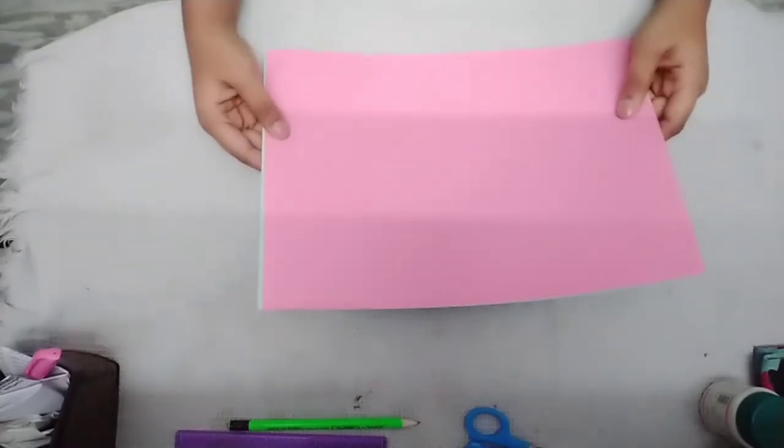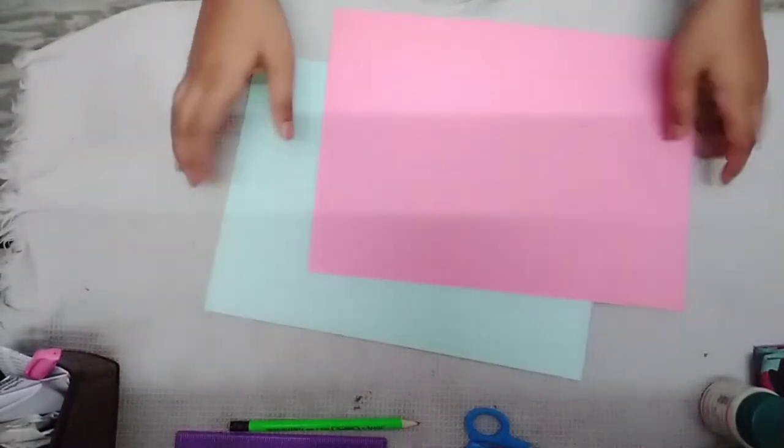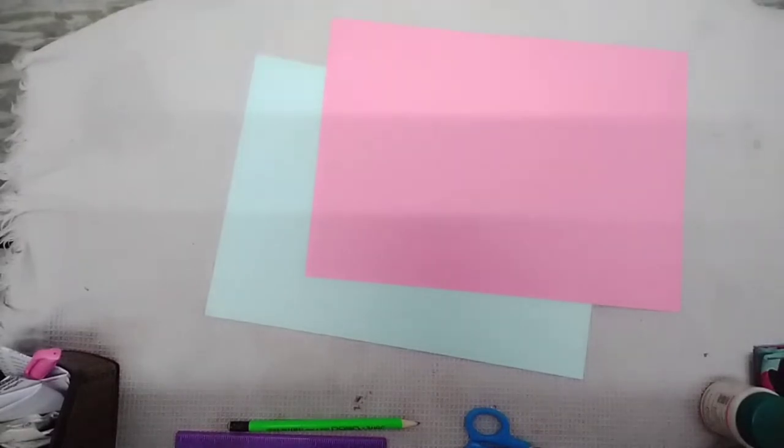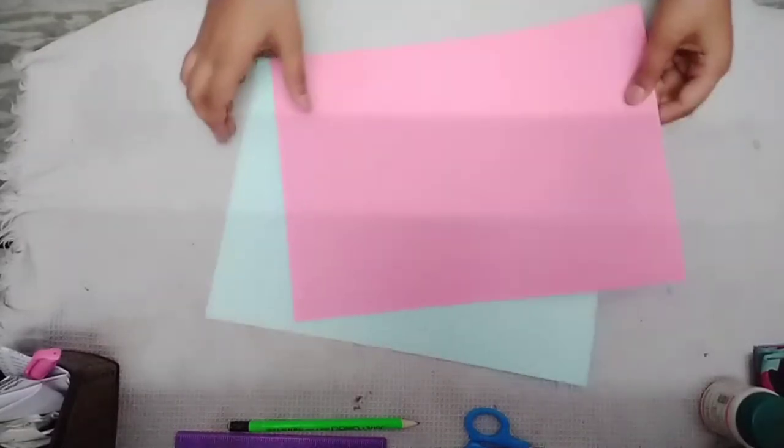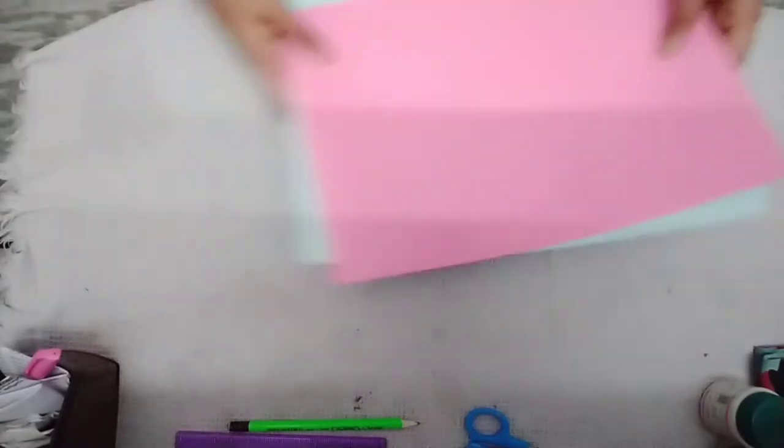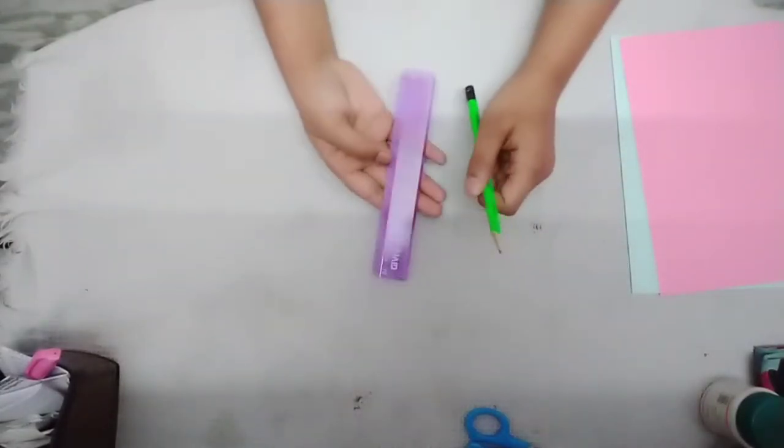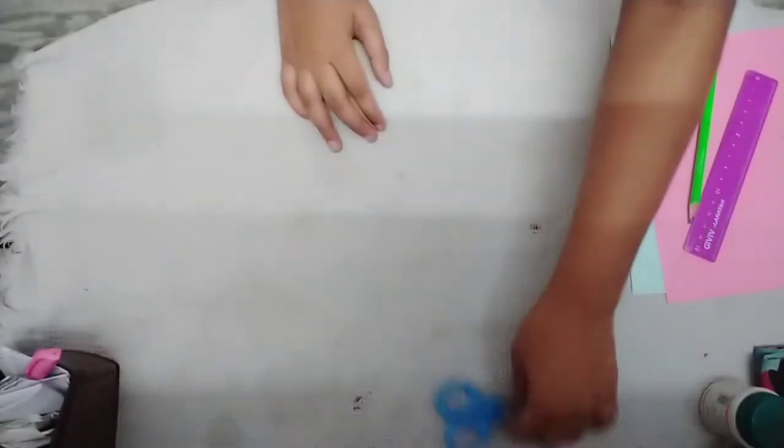Take an A4 size sheet in any two color combinations of your choice. I have taken pink and blue A4 size sheets. Then you have to take a scale and a pencil, then a scissor, and the rest of the materials I will tell later.